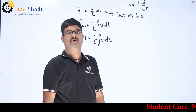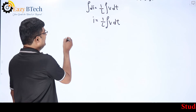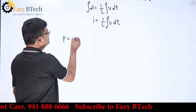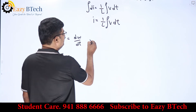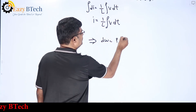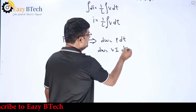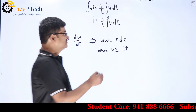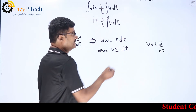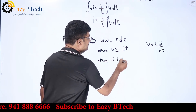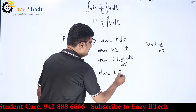Since the inductor is a storage device, we find how much energy it stores. Power is the rate of doing work: p = dw/dt, so dw = p·dt = vi·dt. Substituting v = L·di/dt, we get dw = i·L·(di/dt)·dt. The dt terms cancel, giving dw = L·i·di.